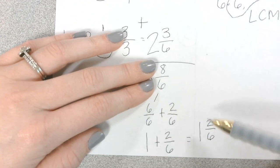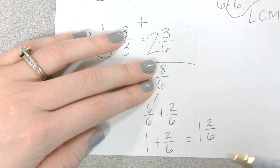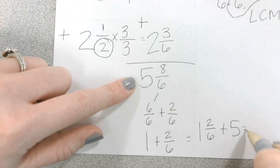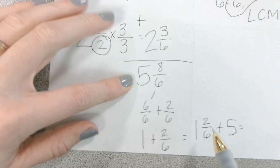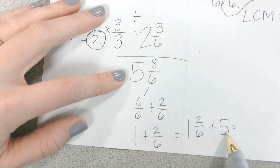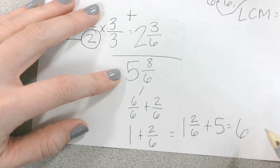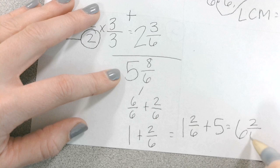A lot of times, you might make the mistake of leaving this as your answer. But what are we forgetting? The 5. The 5. So we've got to add the 5 plus this 1 and 2 6 to get our final answer. Okay. Look at the whole number. 1 plus 5 is how much? 6. 6. And then bring that fraction right over. 6 and 2 6.